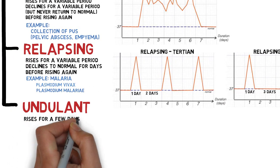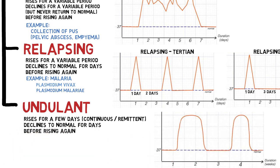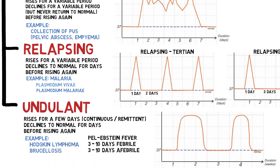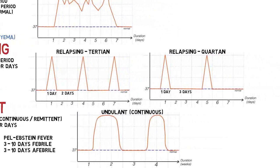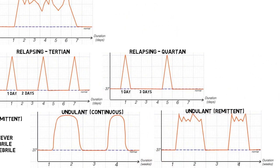The last type is undulant pattern, usually seen in chronic disease. The temperature rises for a few days following a continuous or remittent pattern before declining to normal for a certain number of days, then recurring again in the same pattern. Examples include Hodgkin lymphoma and Brucellosis. Fever in Hodgkin lymphoma is also known as Pel-Ebstein fever, with alternating three to ten days of fever followed by three to ten days of no fever.